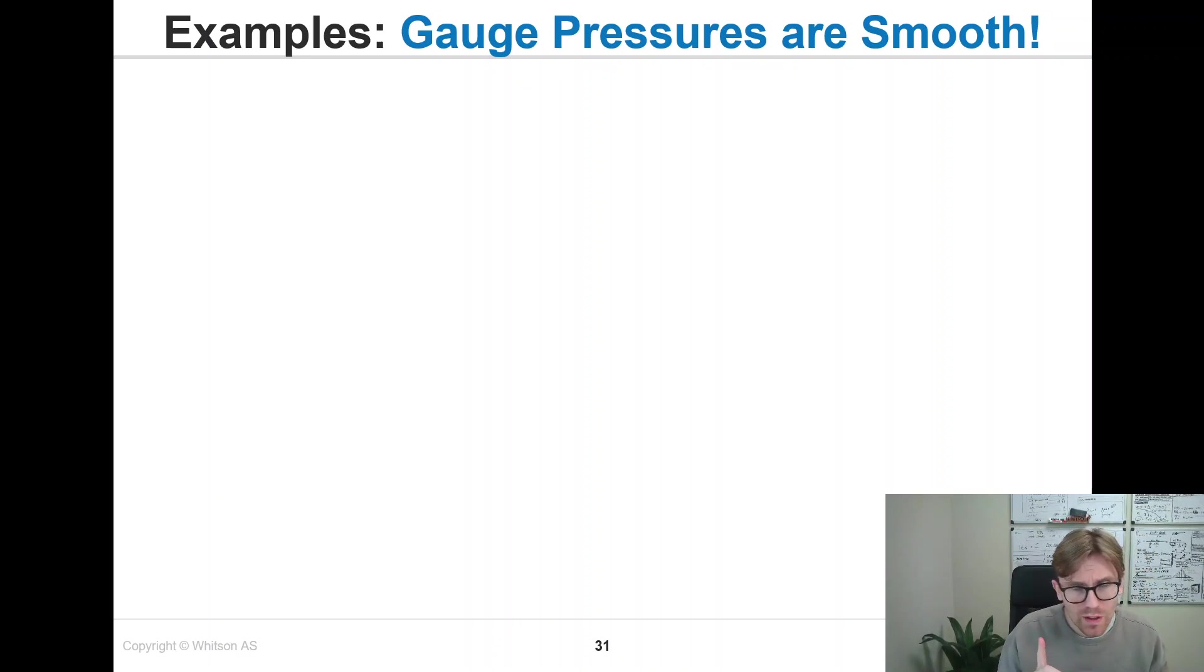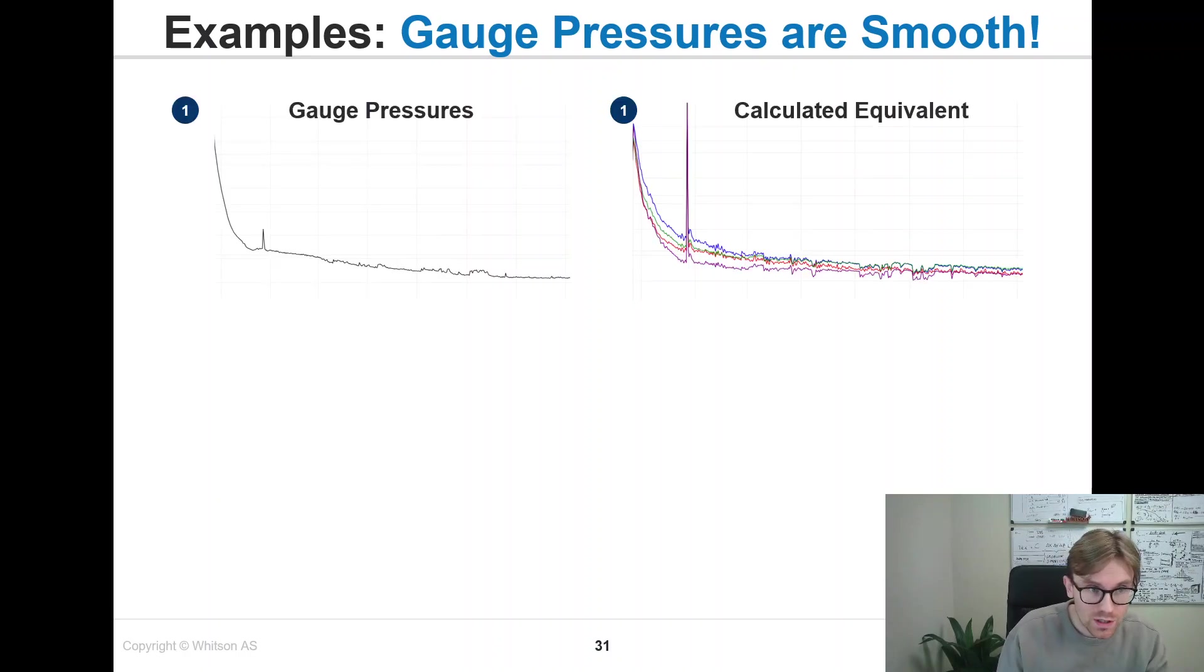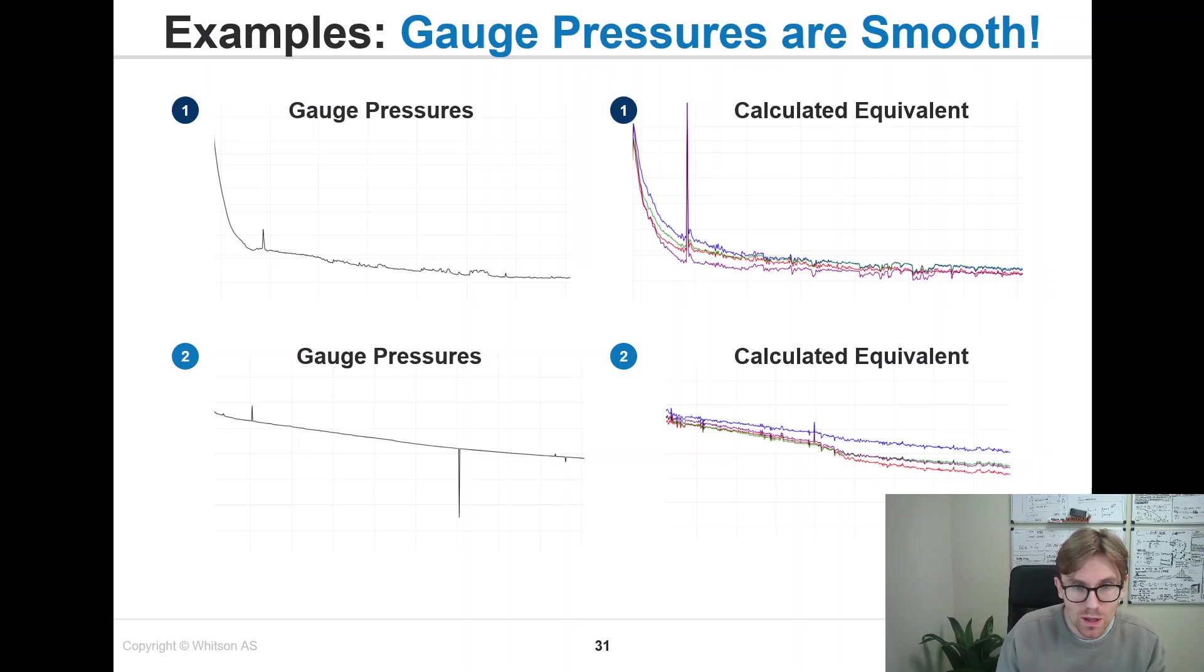A quick reminder, one thing to emphasize is that if you've ever seen a gauge pressure, a real one, they're actually smooth. So that's why I always tell people, smooth your bottom-hole pressures after you've calculated them. This is the gauge pressure, and this is the calculated equivalent of the same pressure, more noisy. As soon as we start to calculate stuff, it becomes more noisy. Here is another example—the calculated equivalence for four different correlations to the right, more noisy. Gauge pressures are smooth, the calculated values are not.